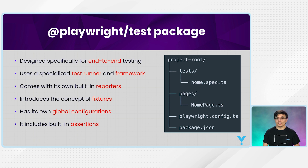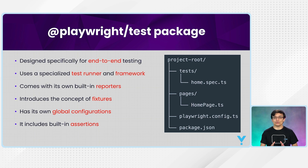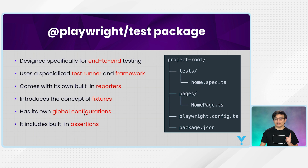The Playwright Test package introduces the concept of fixtures — a set of variables that reference specific types of objects. For example, in Selenium you constantly used the variable type called driver. In Playwright we have something similar called page, which we use for automation. These fixtures are already created and provided, so you can just take and use them in your automation.